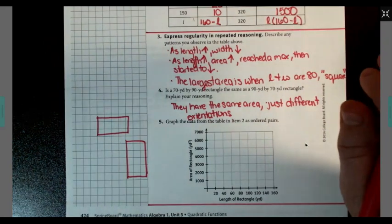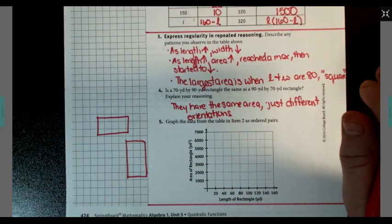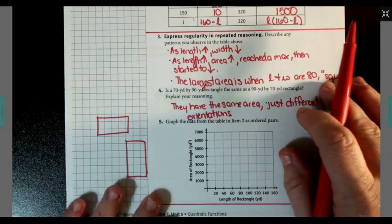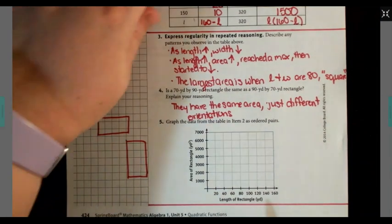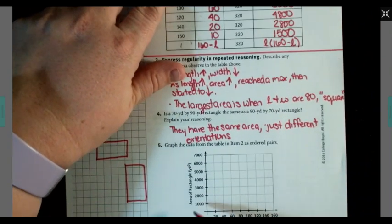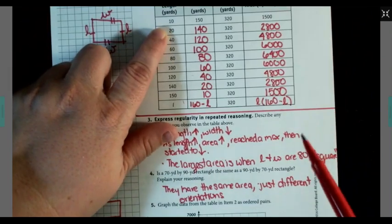Okay. Graph the data from the table in item two as ordered pairs. So length of your rectangle, first column, and area of your rectangle, which is that last column.